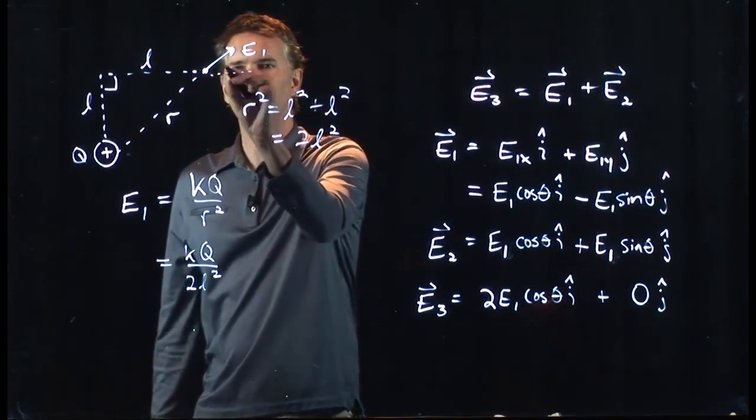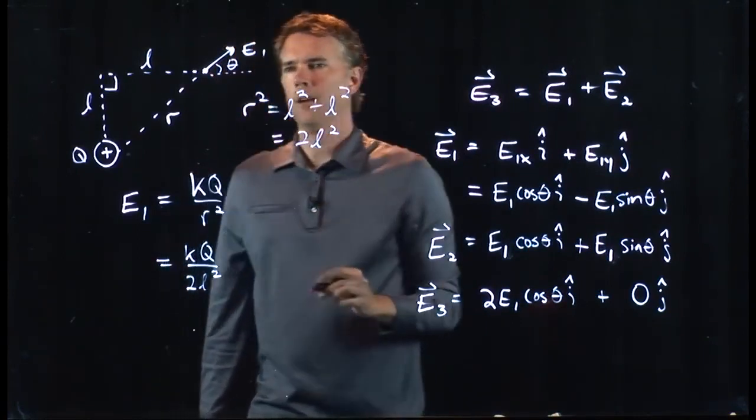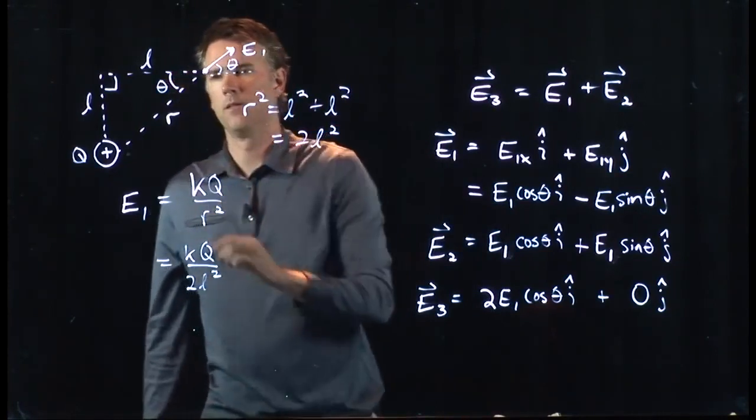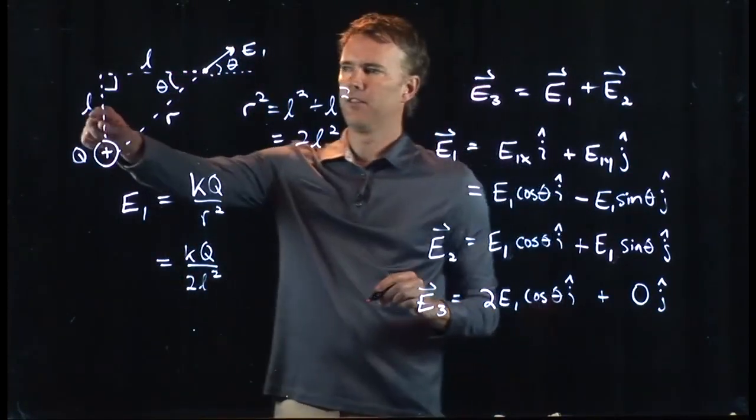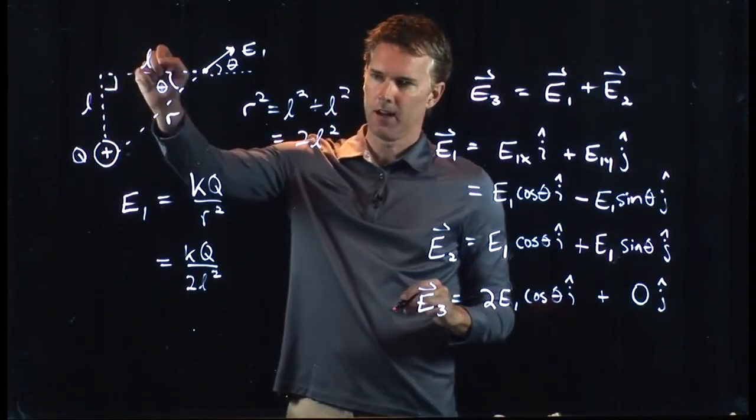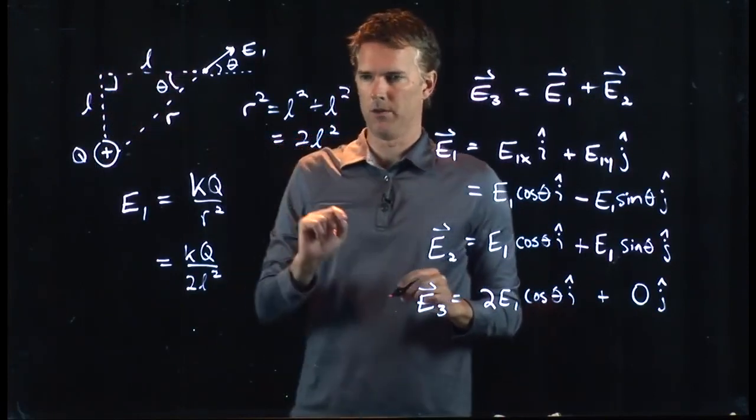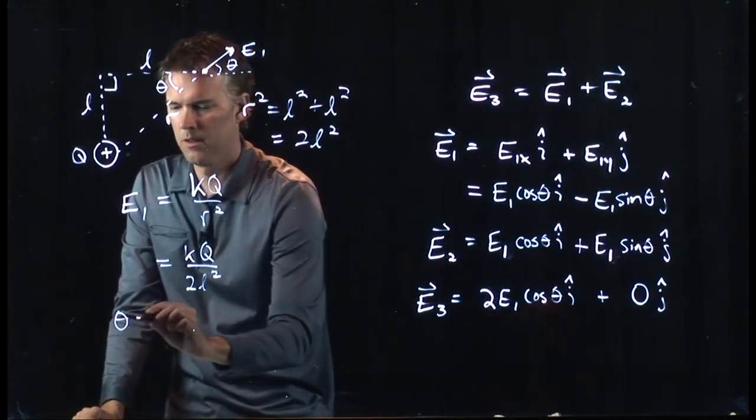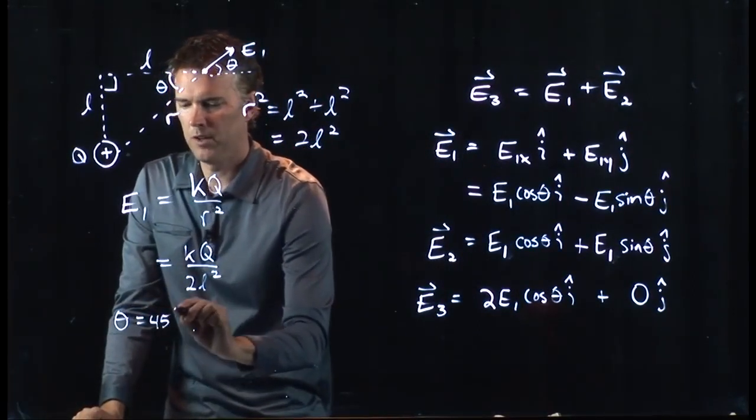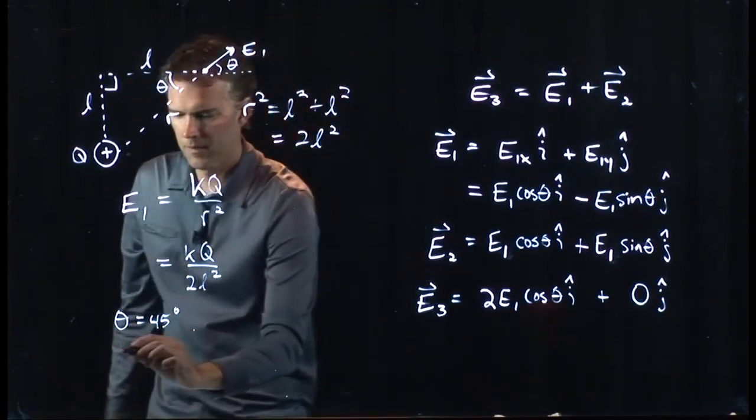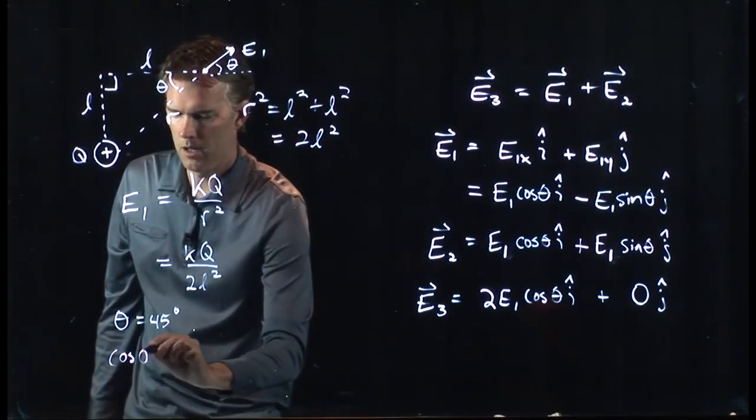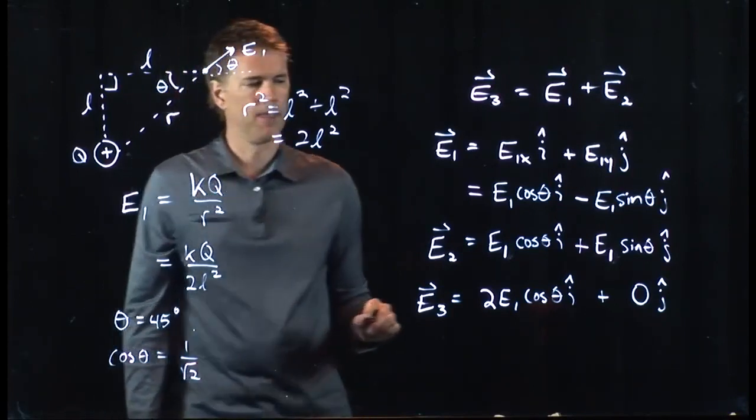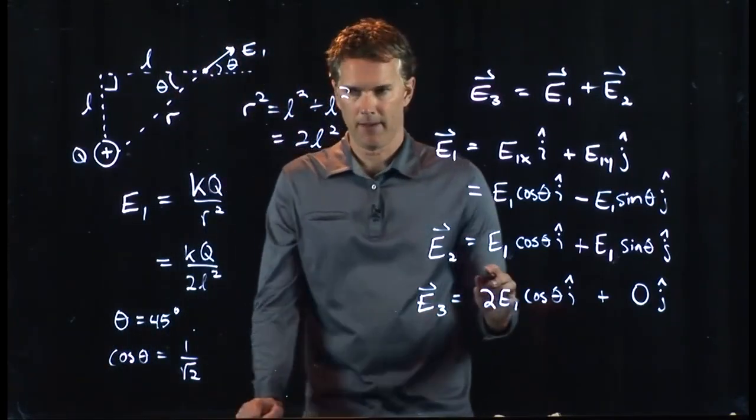Theta, we said, was this angle. But that angle is exactly the same as this angle. And since this side is L and that side is L, it's a 1, 1 square root of 2 triangle, which means theta is 45 degrees. And cosine of 45 degrees is 1 over root 2. And so now we have everything we need.